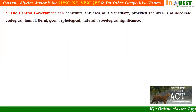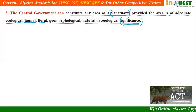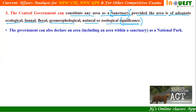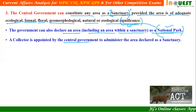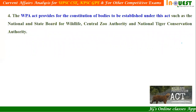Salient feature number three: the central government can constitute any area as sanctuary, provided the area is of adequate ecological, faunal, floral, geomorphological, natural or zoological significance. The government can also declare an area, including an area within the sanctuary, as a national park. A collector is appointed by the central government to administer the area declared as a sanctuary.